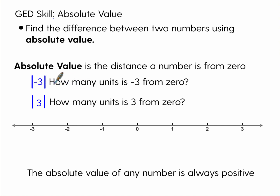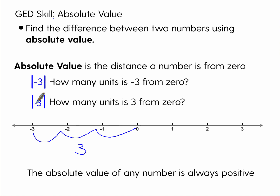The question is: how many units is negative three from zero? If we go to our number line, negative three is one, two, three units from zero. What is the absolute value of just three? How many units is three from zero? It's also three. So the absolute value of negative three or positive three is always positive — it's always three.